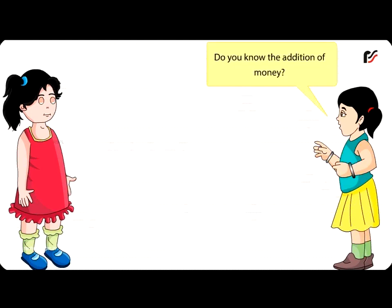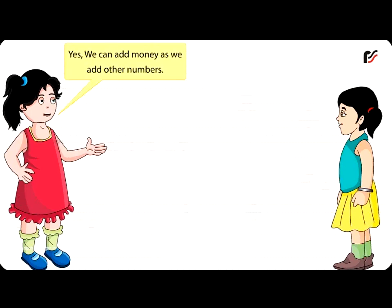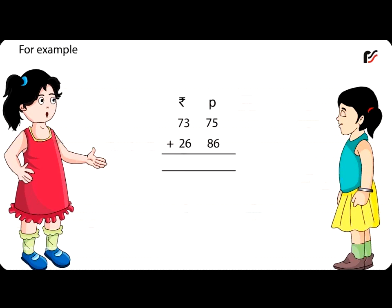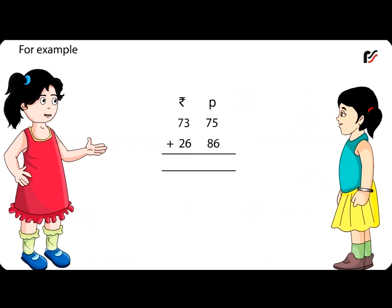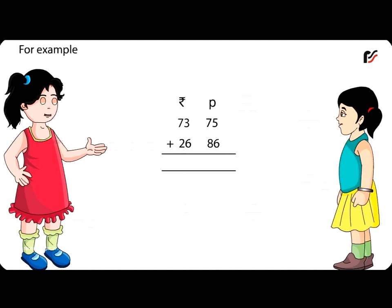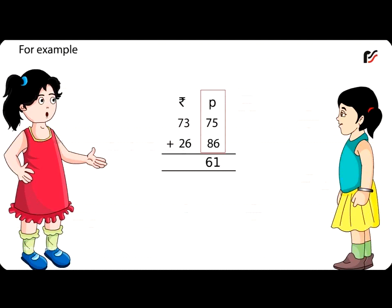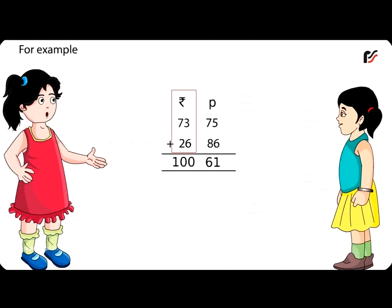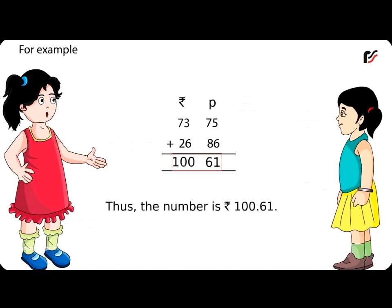Addition of money: We can add money as we add other numbers. For example, to add ₹73.75 and ₹26.86, arrange the rupees and paise columns respectively. Add the figures in the paise column first, then add the figures in the rupees column. Thus, the sum is ₹100.61.